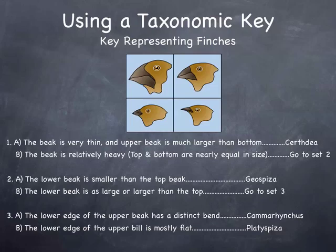Let's say I have these finches, and I want to know which finch is which. Basically I look at the bird and I read through the statement. So let's do an example. If I look at this finch, is the beak very thin and the upper beak is much larger than the bottom? Or is the beak relatively heavy and top and bottom nearly equal in size? Which one applies to this? B. So I go, okay, telling me go to set two. Is the lower beak smaller than the top? Or is it as large or larger? As large or larger. Yeah, I'd say as large or larger. Let's go to set three. Is the lower edge of the upper beak have a distinct bend? Or is it mostly flat? Yeah, look at the end. It's a distinct bend. So this is a geospiza finch. Identified it using this dichotomous key.